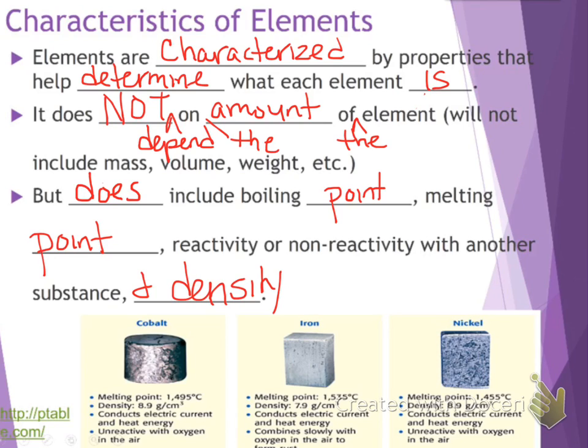100 grams of cobalt is always going to melt at 1,495 degrees Celsius. Whether it's 100 grams or if it's 10 grams, the melting point is always going to be the same. Its density is always going to be 8.9 grams per centimeters cubed. Whether it's 100 grams or whether it's 10 grams, that's always going to be the same. So the mass of it does not play a part. It's these other things that play a part in determining which each element is.